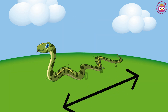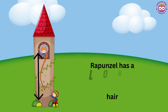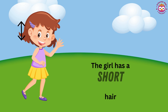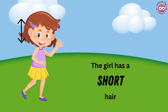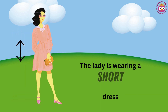This snake is long. This snake is short. Rapunzel has long hair. The girl has short hair. The singer is wearing a long dress. The lady is wearing a short dress.